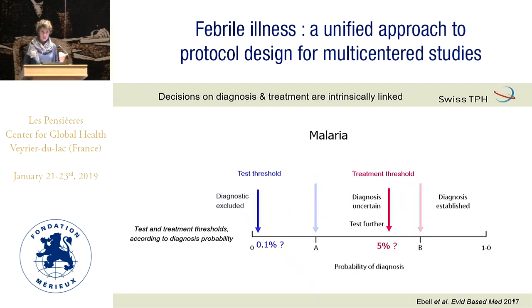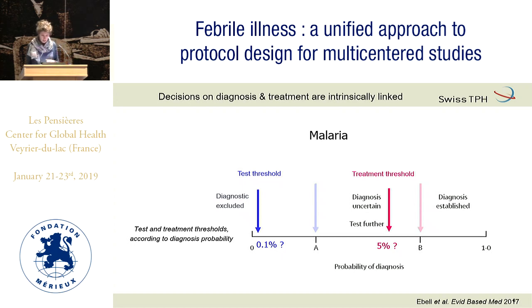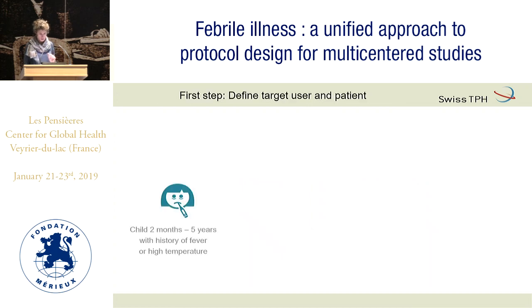What people sometimes forget is that these thresholds are different from one disease to the other. This is the big problem for these algorithms — they apply the same threshold for all diseases, while for malaria we have to be on the safe side. There are also cultural factors. Studies show that in the United States these thresholds are much lower than in Europe, and we don't know at all what Africa is thinking. So the algorithm should always include the treatment part, not only the diagnosis.